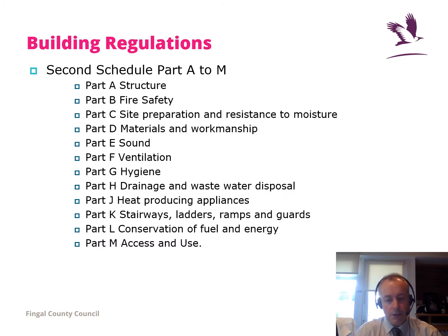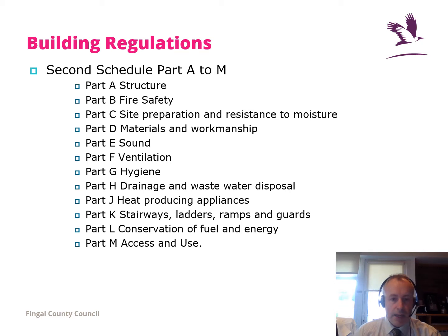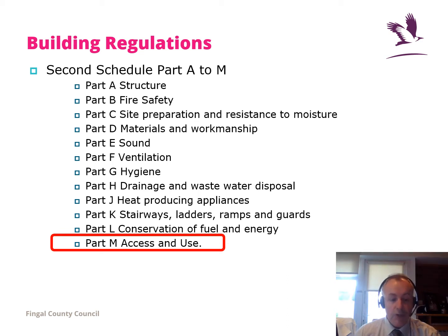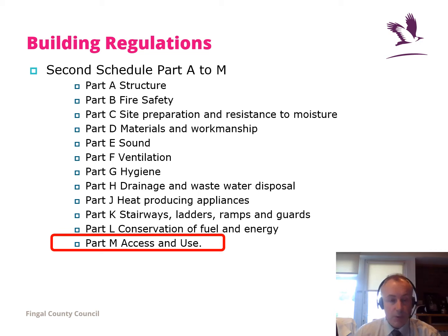There are 12 parts to the building regulations and M is the last one. I always see Part M as the anti-discrimination part of the building regulations because it comes really from the Equal Status Acts and the Disability Acts, to ensure that buildings and the use of buildings don't discriminate against people with different abilities.